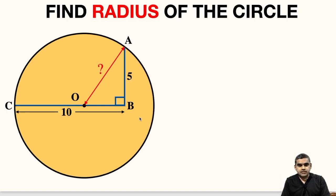So let us try to solve this question. First of all we can see that ABO is a right angle triangle.